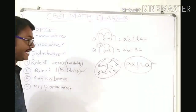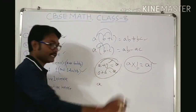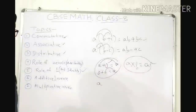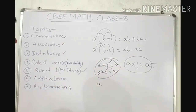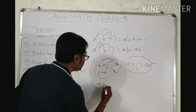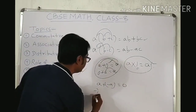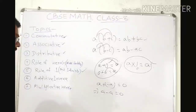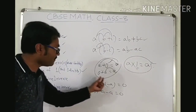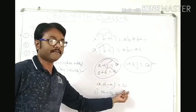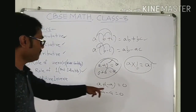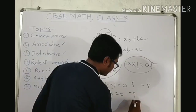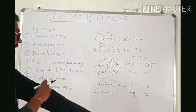Next is additive inverse. If A is a rational number, what do we add so that the result is 0? A plus (minus A) equals 0, because A minus A equals 0. The negative of the rational number is its additive inverse. For example, additive inverse of 5 is minus 5, and additive inverse of minus 9 is 9.